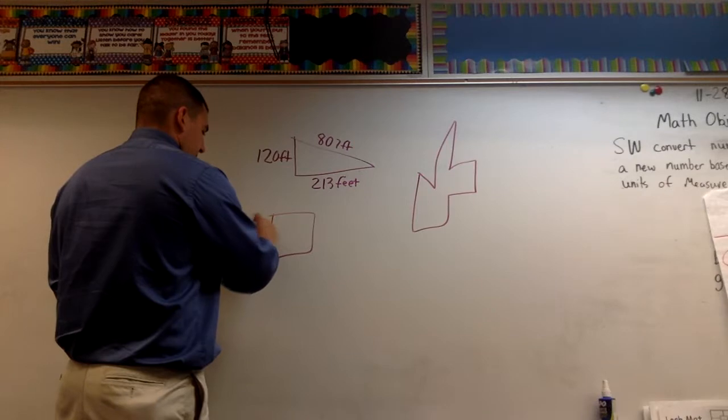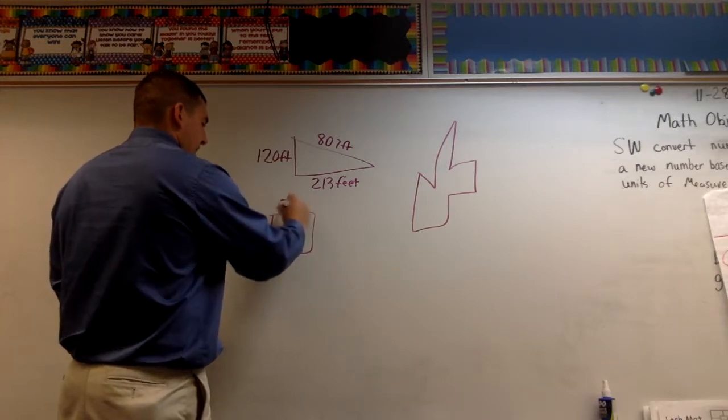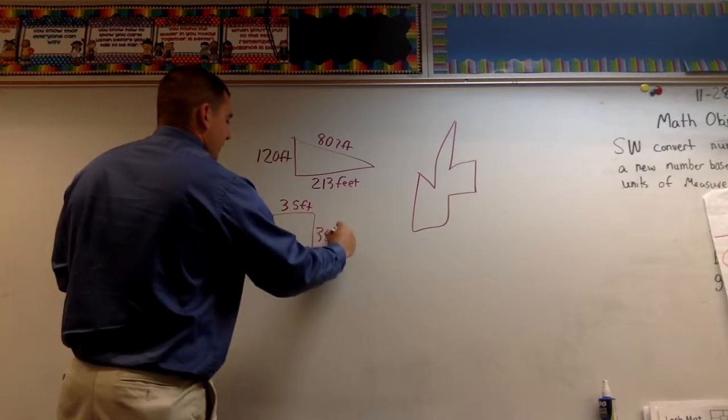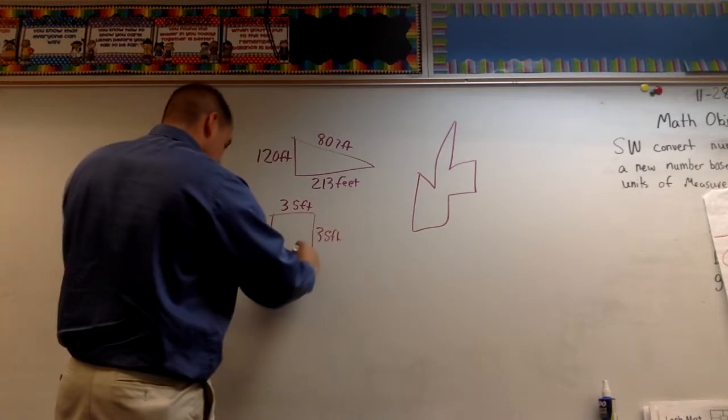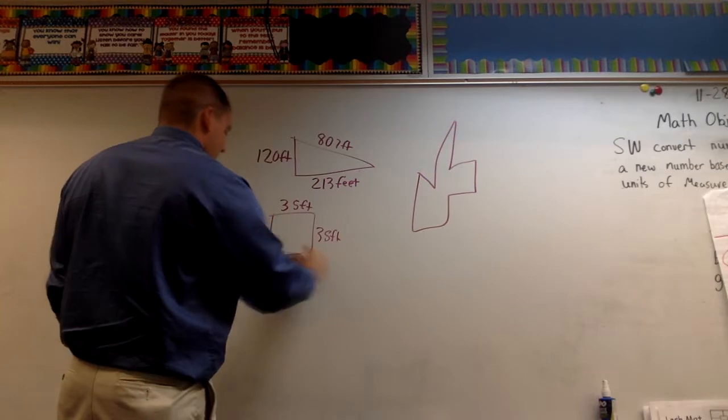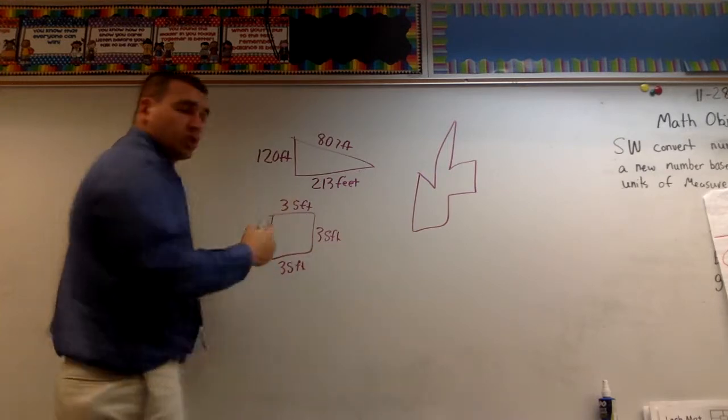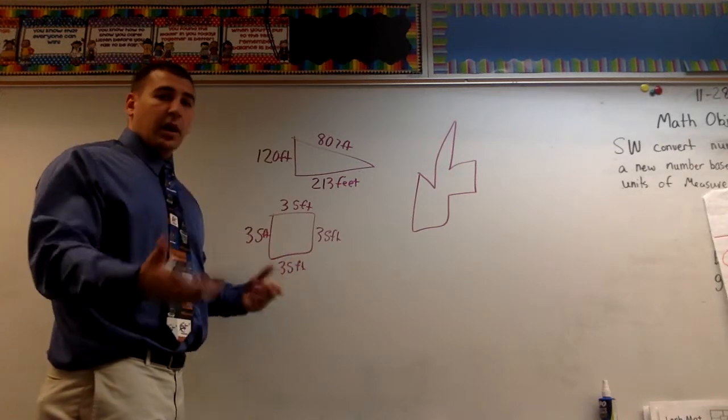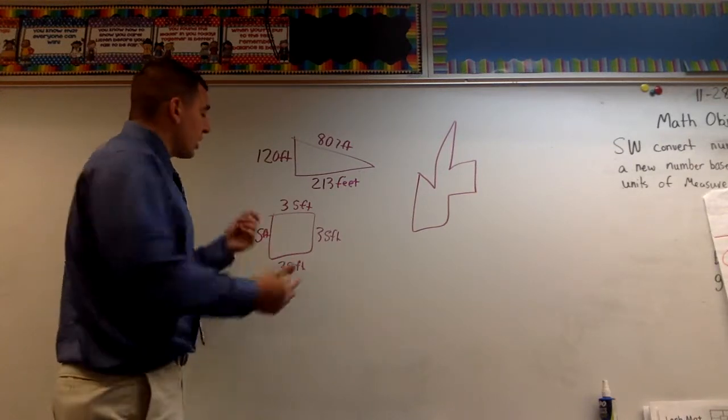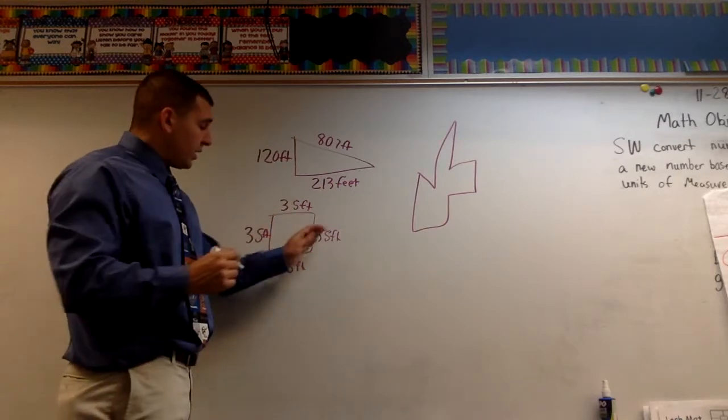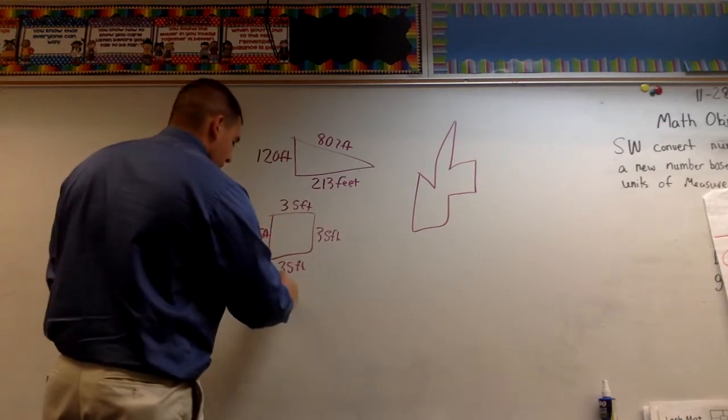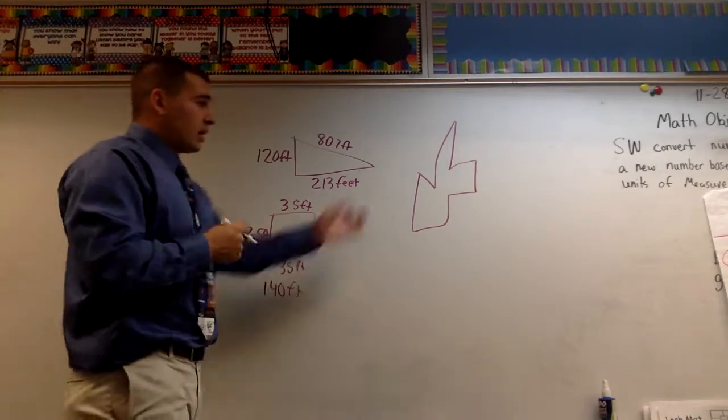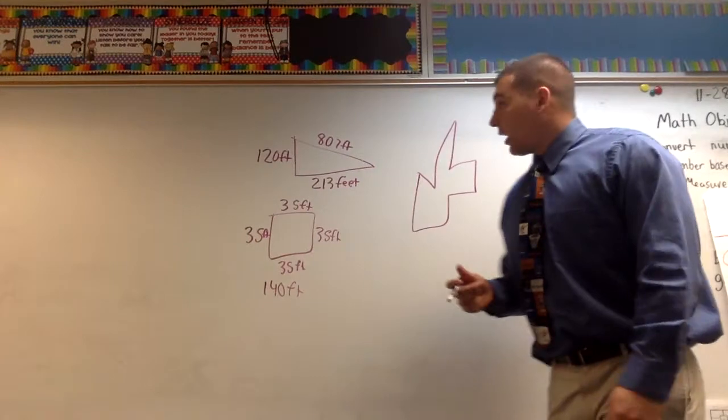So I might make this side 35 feet, 35, ooh, I need my units. Feet, 35 feet, and 35 feet. If I'm doing that, I'm adding these, and I'm just doing this really quickly. If you want to, you could pause and try to add these up, but I'm just going to kind of show you here, because you could have a lot of different answers. 35 plus 35 is 70, two groups of that would be 140 feet. Does that pass the law? Yeah, definitely.